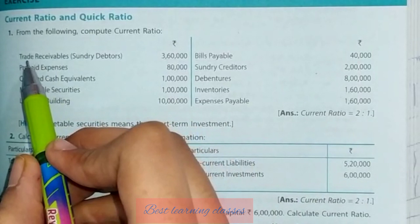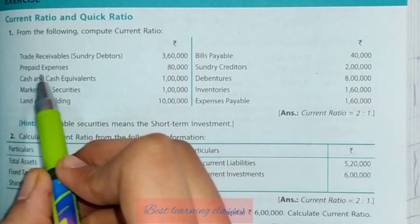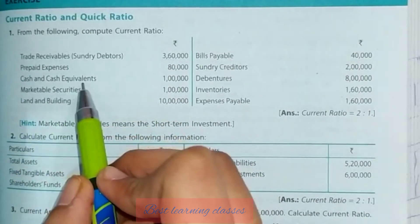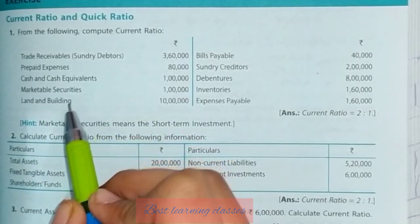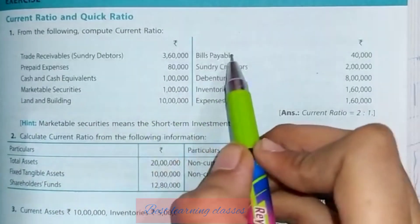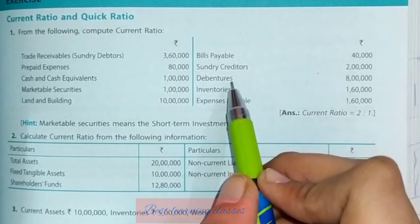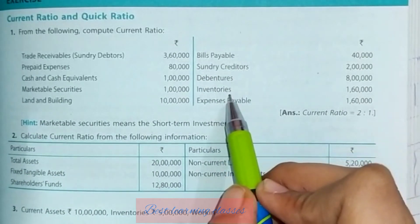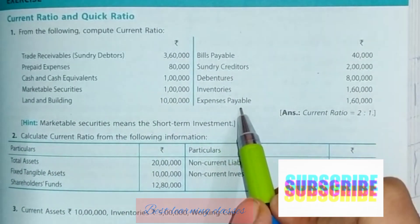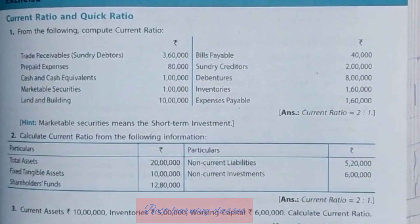See what is given here. Trade receivables are given, prepaid expenses are given, cash and cash equivalents, marketable securities, land and building, bills payable, sundry creditors, debentures, inventories, and expenses payable are also given. You have to calculate the current ratio.